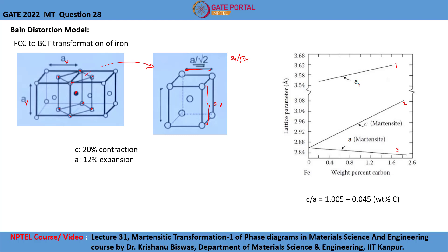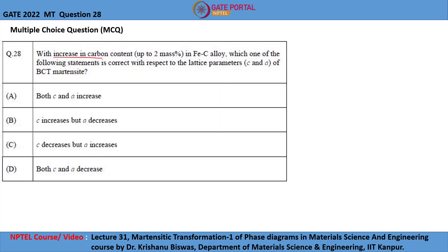From this graph, it is evident that as carbon content increases, the A value decreases and the C value increases. With increase in carbon content, the C/A ratio goes on increasing, leading to heavy lattice distortion. The C/A ratio of BCT lattice is given by: C/A = 1.005 + 0.045 × (weight percentage of carbon). So with increase in carbon content, C increases and A decreases, and the correct answer is Option B.